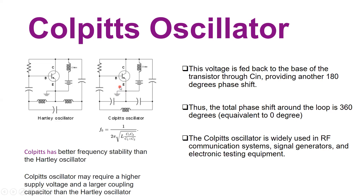The Colpitts oscillator is widely used in RF signal generators and electronic testing equipment. Compared to the Hartley oscillator, the Colpitts has greater frequency stability, though it may require higher supply voltages and larger coupling capacitors. In summary, the Colpitts oscillator is a form of LC tuned circuit widely used in RF applications, capable of generating oscillation frequencies up to the megahertz range. If you like the video, click like, leave comments, and share this module with others. Stay tuned for more engaging content — happy learning!